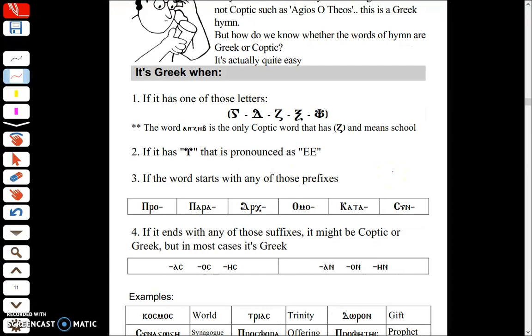Let's start with some rules. They will look like they are hard to memorize like a lot of rules, but eventually you just know them over time and you can tell whether it's Greek or Coptic. So the first rule we have here is: